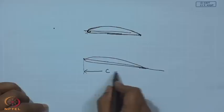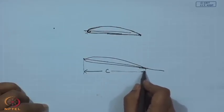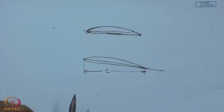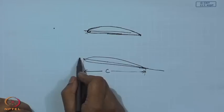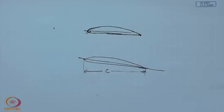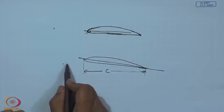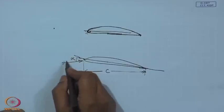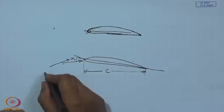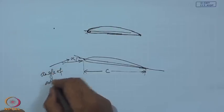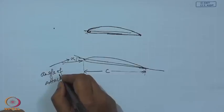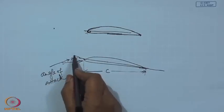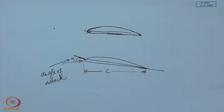The chord is usually denoted by C and is a very important reference line, because the angle at which it makes with the flight direction or the relative wind is called the angle of incidence or angle of attack, usually denoted by alpha. If this is the relative wind direction, then this angle is called angle of attack or incidence. Each and every cross section of the wing is such an airfoil, and so each cross section has an angle of attack.